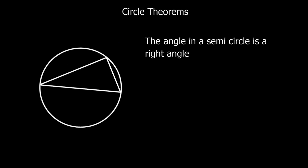The angle in a semicircle is a right angle. So this is the diameter here, it goes through the center. Any angle we make from there — whether it's up there or anywhere on the circle — it's going to make a right angle. An angle in a semicircle is a right angle.